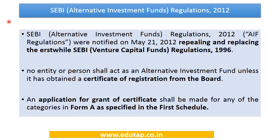SEBI Alternate Investment Fund Regulations were issued in 2012 and replaced the earlier SEBI Venture Capital Funds Regulations 1996. So since 2012, both AIFs and VCFs are regulated under a single set of regulations. As per these regulations, any person who wants to become an AIF must obtain a certificate of registration from the board, by applying in Form A of the First Schedule of the regulation.